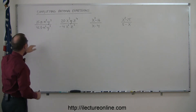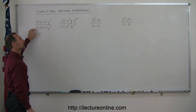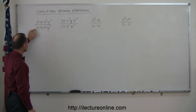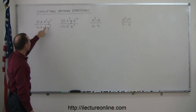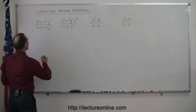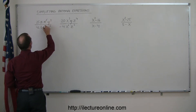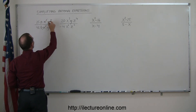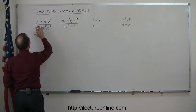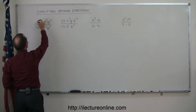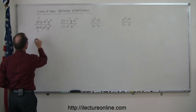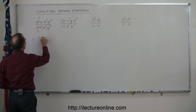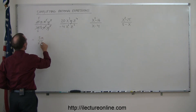Looking at our first one here, we see a 35 and a 42 — they're both divisible by 7. I see an n-squared and an n-squared, and a y-cubed and a y-cubed. The n-squared in the numerator cancels the n-squared in the denominator, and the y-cubed cancels the y-cubed. 35 divided by 7 is 5, and 42 divided by 7 is 6. So this simplifies to 5a divided by 6b.